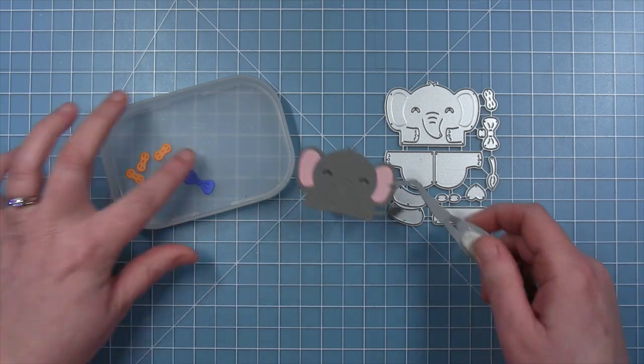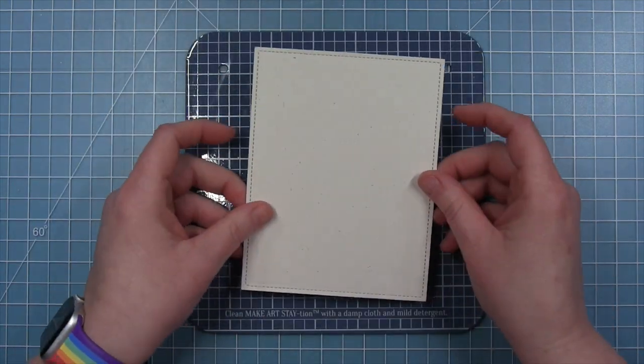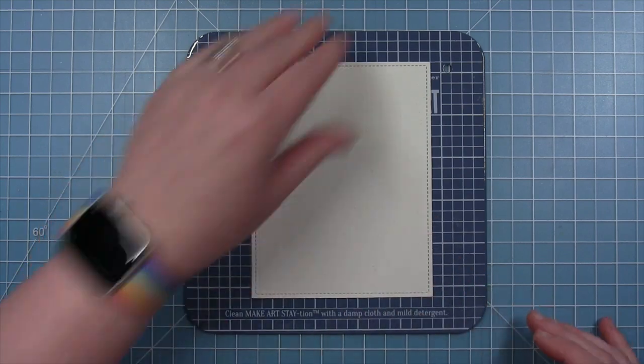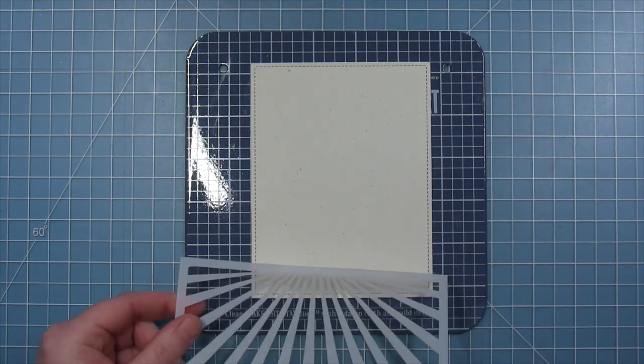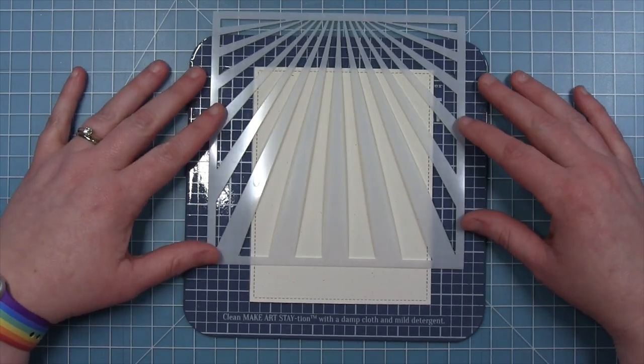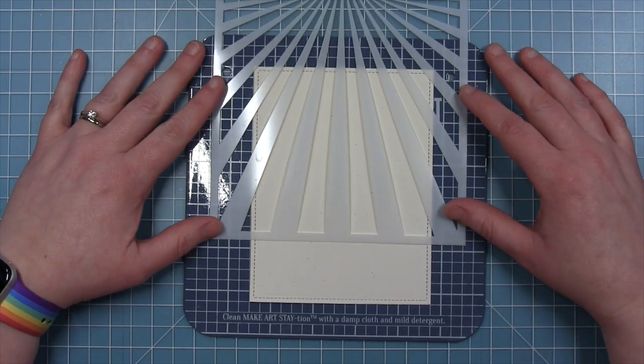And I'll get to the peanuts and the bow tie when I start to assemble my card. I'm not going to use those just yet. Now for the background of my card, I'm creating a circus tent look. So I have a piece of speckled eggshell cardstock. And it's cut with the largest stitch rectangle.